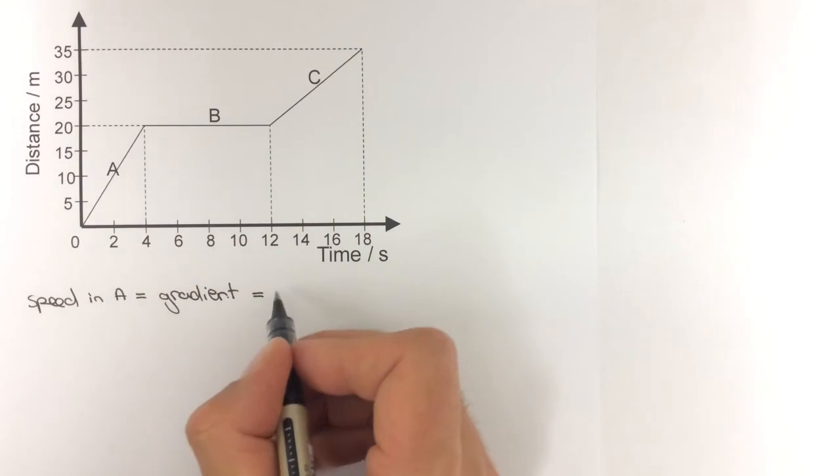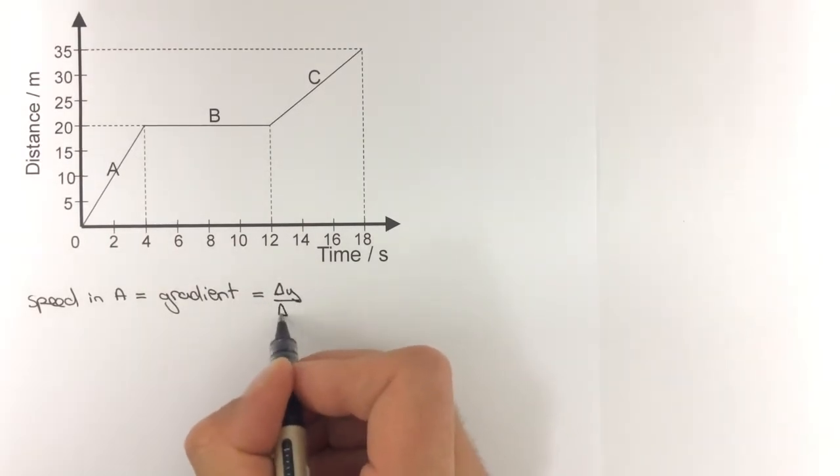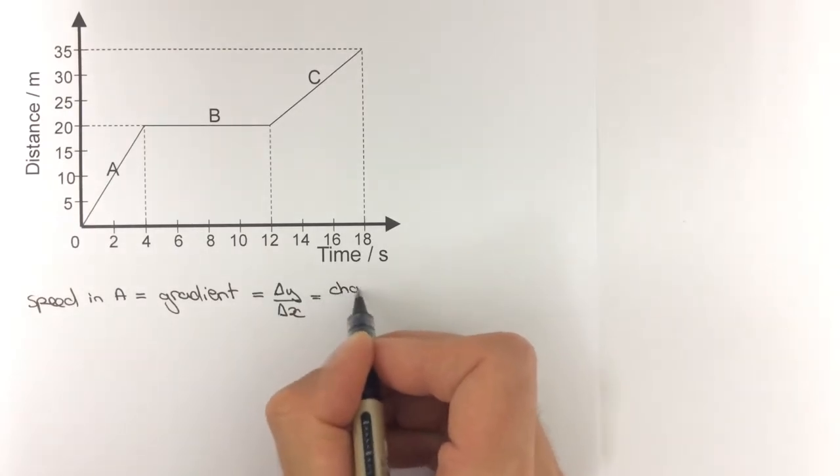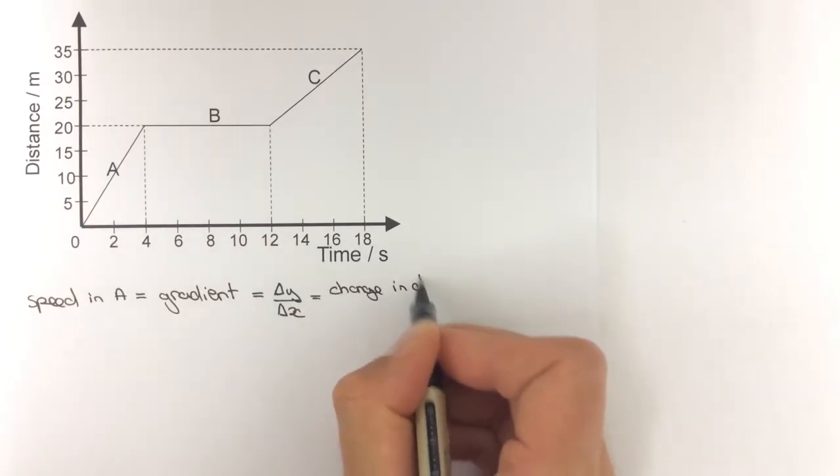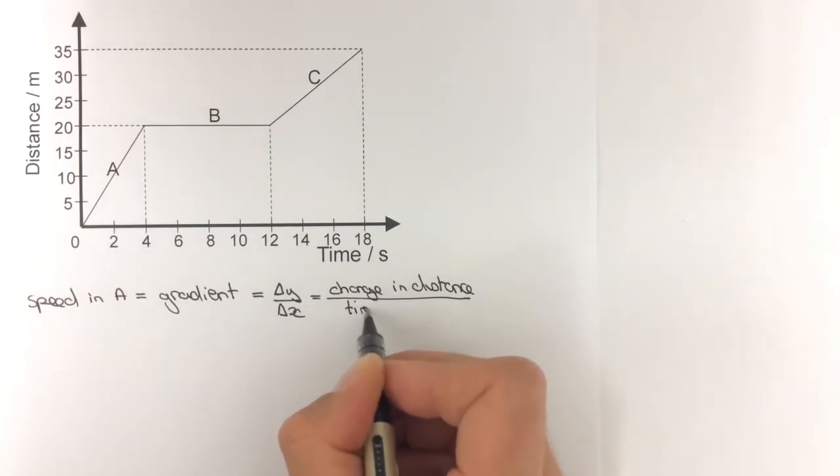which is going to be the change in Y over the change in X, or you could think of that as change in distance over the time taken.